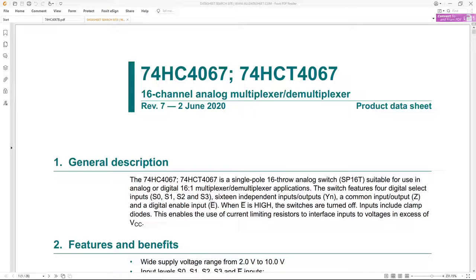16 to 1 multiplexer demultiplexer applications. The switch features four digital select inputs S0, S1, S2 and S3, 16 independent inputs and outputs, a common input output, and a digital enable input which when high switches are turned off.